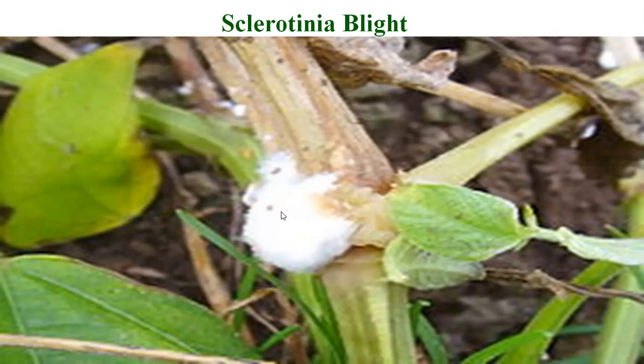The fluffy white cottony mycelial growth releases sclerotia into the air, causing secondary infection to nearby plants. This concludes the diseases of crucifers and brinjal. Only two diseases of crucifers and two diseases of brinjal are important for your examination and syllabus. In the next lecture, we will discuss the diseases of okra and beans.